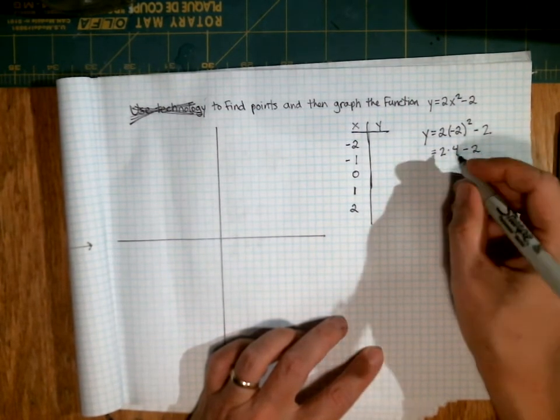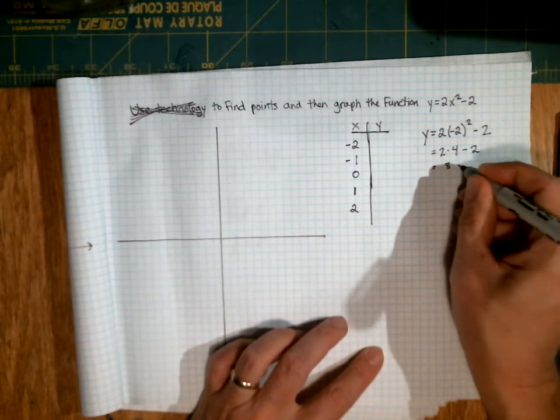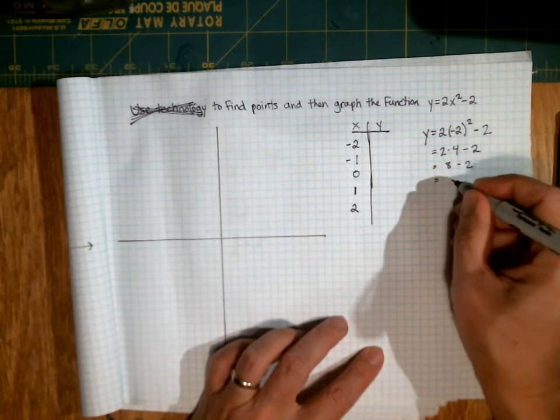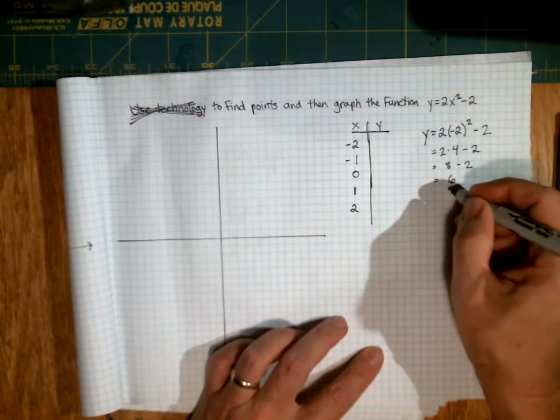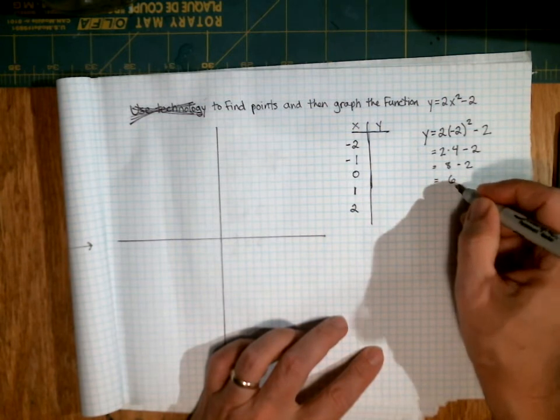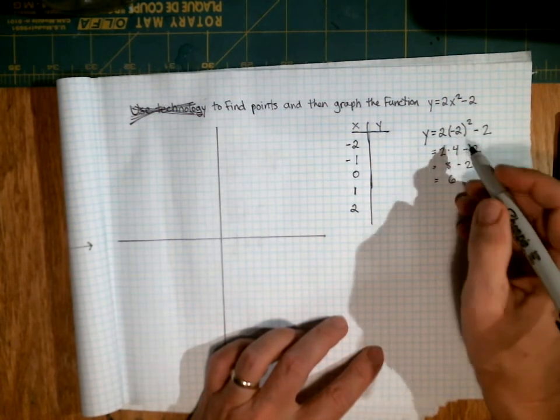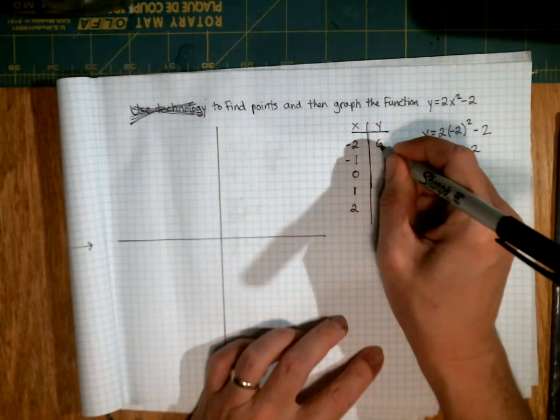Then I'm going to do my multiplication. So that's 8 minus 2. And that is just 6. So now I know that the y value is 6 when x is negative 2. So I can put a 6 right here.